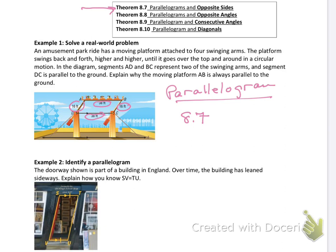Example 2: The doorway shown is part of a building in England. Over time, the building has leaned sideways. Explain why you know that SV equals TU. You're given one pair of this quadrilateral that are parallel and congruent. If you have one pair that's parallel and congruent, then you know it's a parallelogram. If it's a parallelogram, then by definition, all opposite sides are equal. So SV equals TU because they're part of a parallelogram.